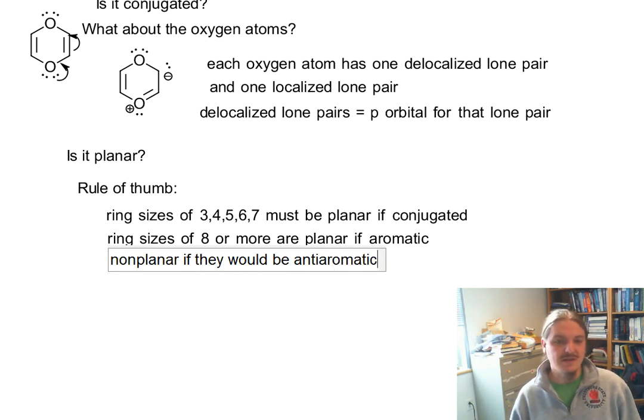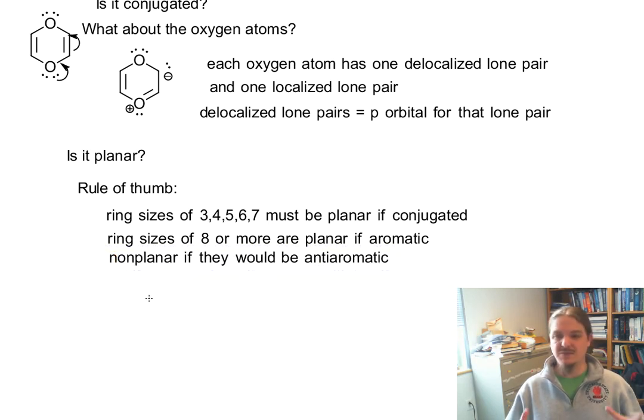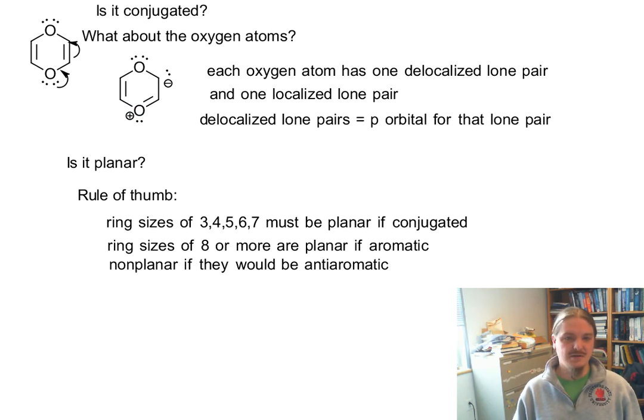And we saw this behavior in cyclooctatetraene that it's big enough to be flexible enough to fold out of planarity. So larger rings can do that. But smaller rings must be planar if they're conjugated. So we would expect this molecule to be planar, if conjugated and it's conjugated. So it's planar.